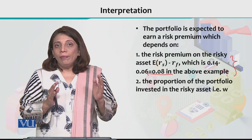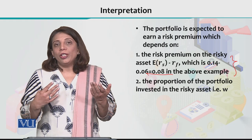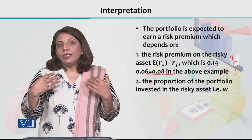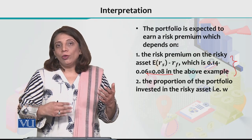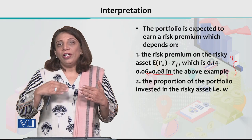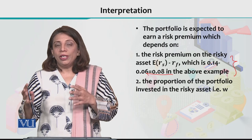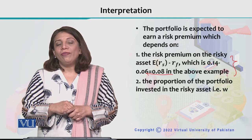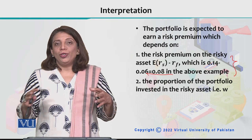These are the two important things we have to consider when planning to allocate funds among different investment opportunities: the risk premium and the proportion invested in each asset class.